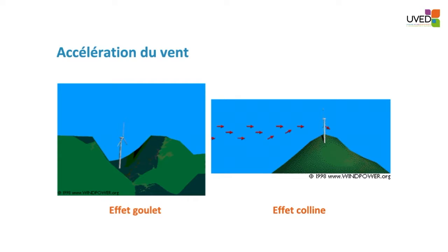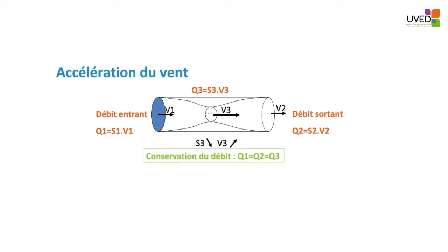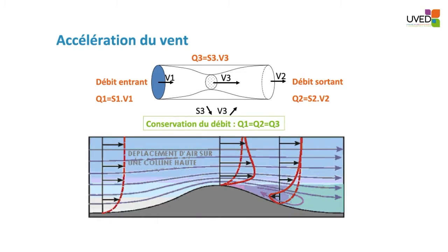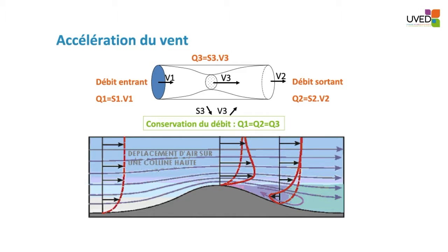Consider a watering hose: the input flow equals the output flow. If the tube has the same cross-section at input and output, the flow — cross-section multiplied by speed — is identical at both ends. If we pinch the tube in the middle, the cross-section decreases and locally the speed increases. This is exactly what happens with a hill on flat land: the virtual tube is compressed above the hill and wind velocity increases there. As altitude increases, wind velocity is restored. Behind the hill, the profile is reversed into a vortex, and it is not advisable to place a windmill there.